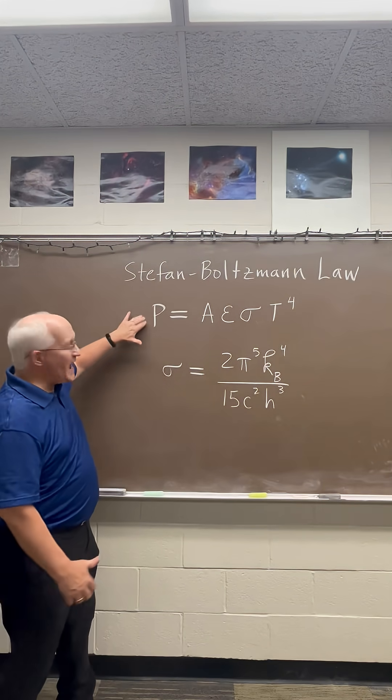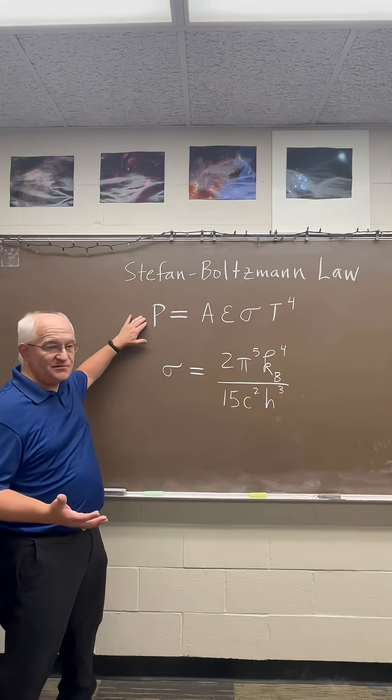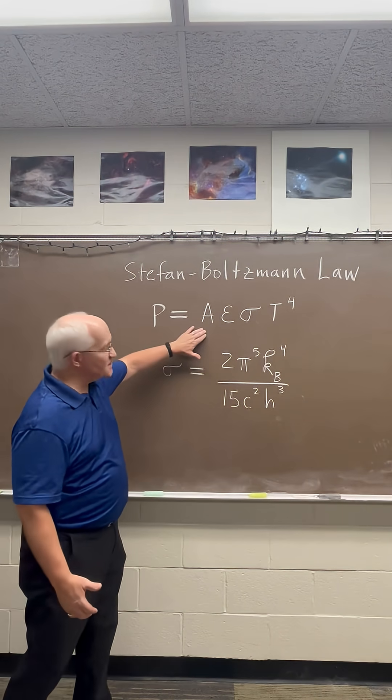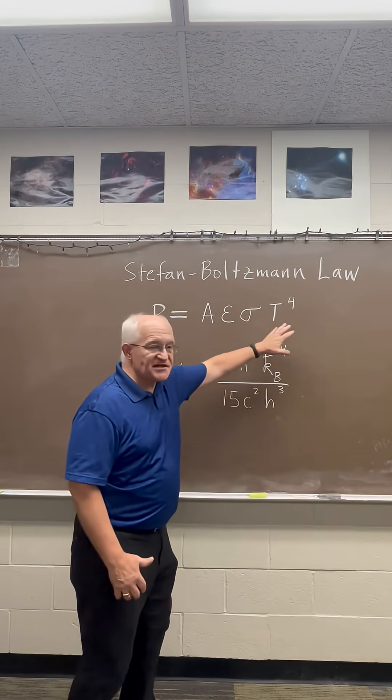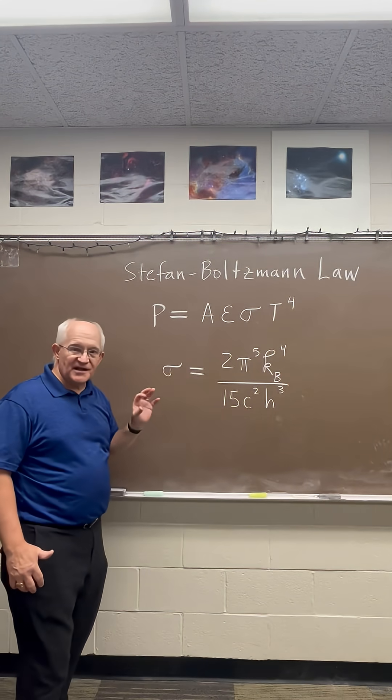which states that the power radiated away by a hot object is given by this expression, where A is the surface area of the object, epsilon is the emissivity of the surface, T is the temperature, and sigma is the Stefan-Boltzmann constant.